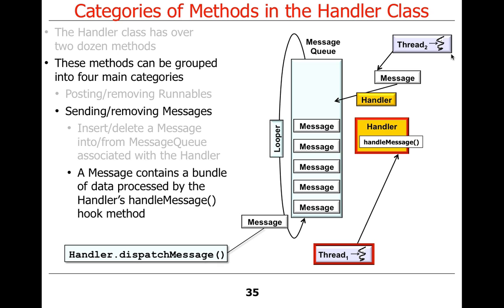With runnables, when you post a runnable, you typically create the work to be done at the point where you make the call — using a closure or a local class instance. With sending messages, there's a sender and a receiver, and those are two different things. We'll talk about that more later.